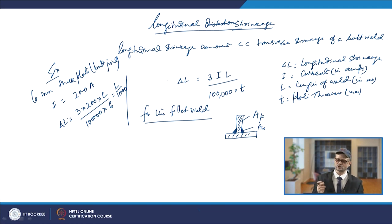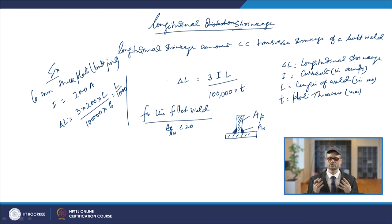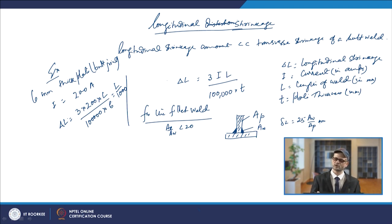When the ratio AP/AW is less than 20, the longitudinal shrinkage for fillet weld is given by: ΔL = 25 × (AW / AP) mm.